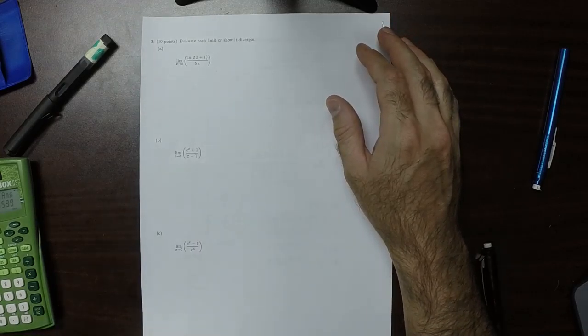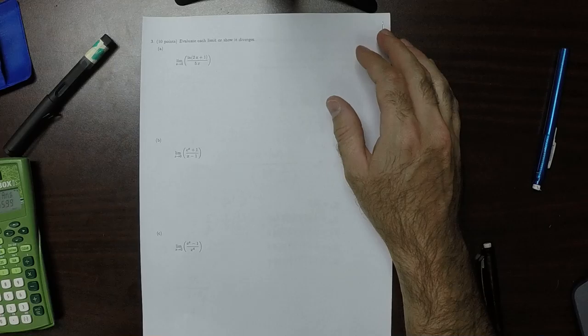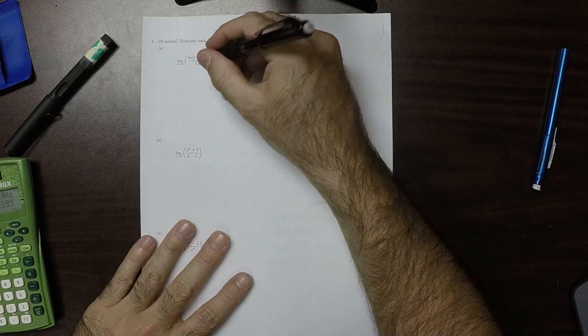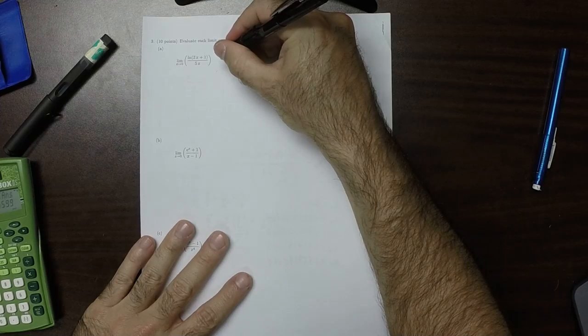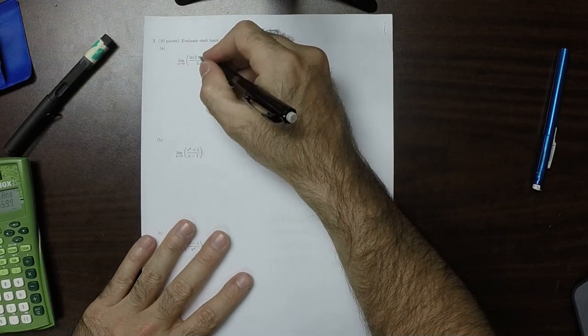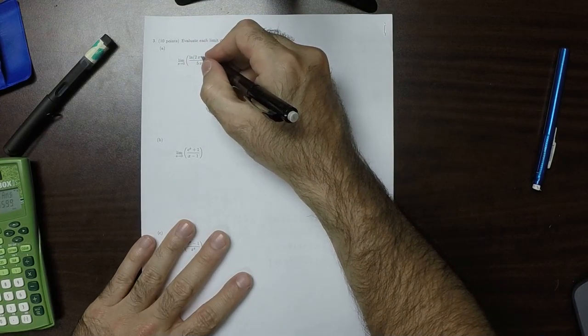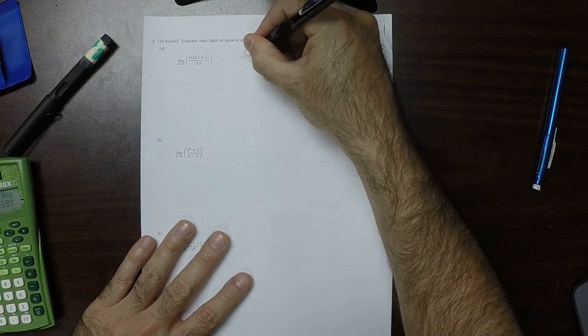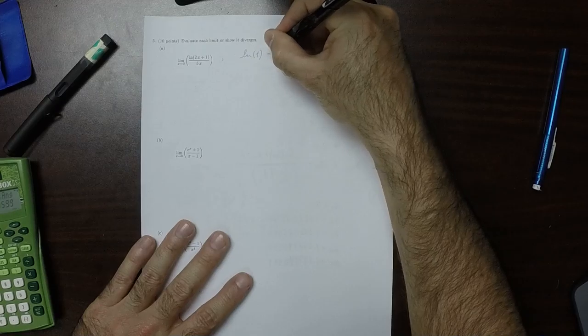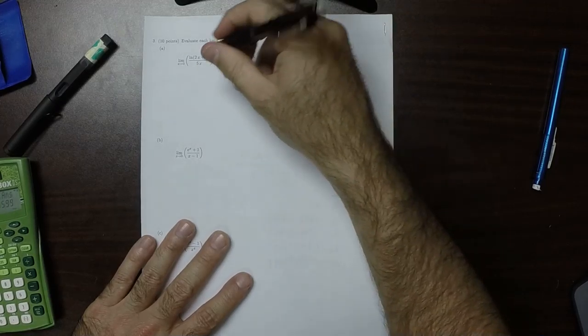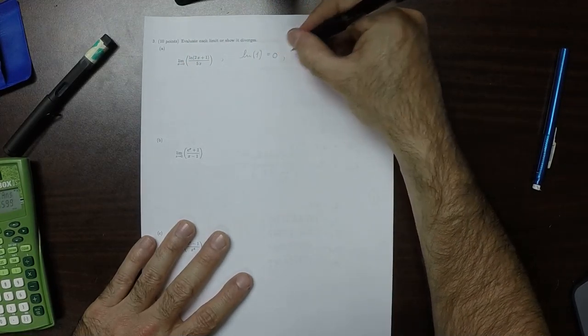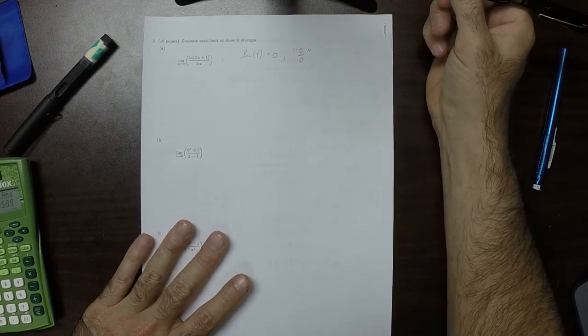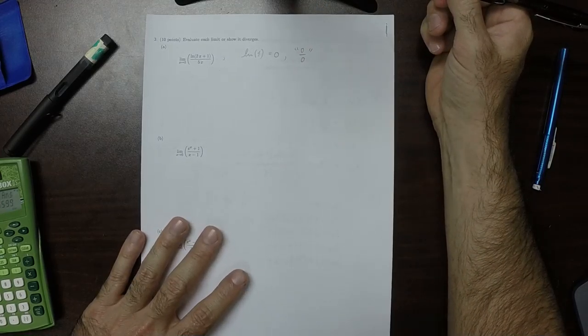So now I evaluate each limit. Well, the denominator is 0. And when you plug in 0 into 2x plus 1, you get 1. Remember that the log of 1 is 0. So that means this limit is in the form 0 over 0. So that's a ratio indeterminate form. So this is a sick limit.